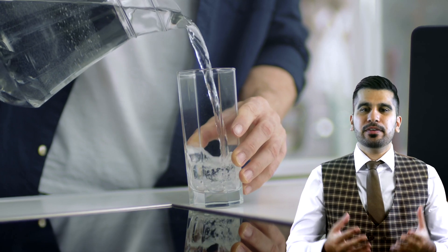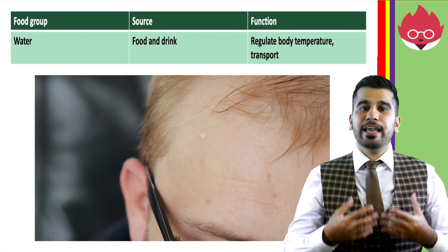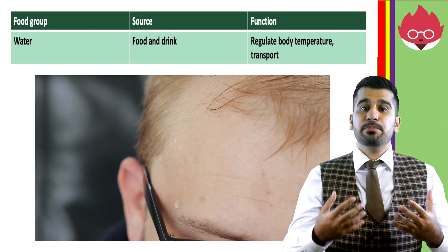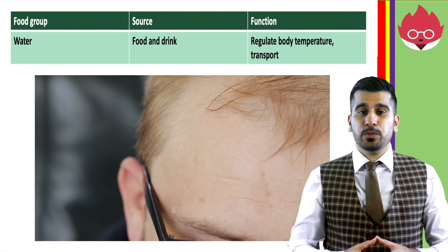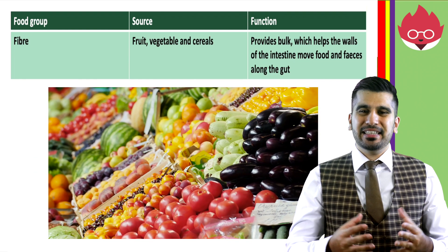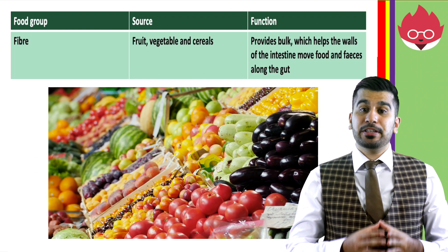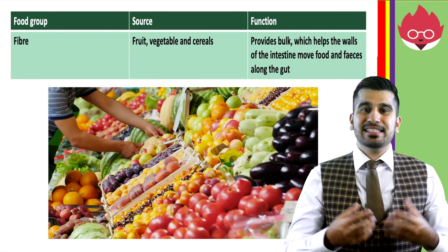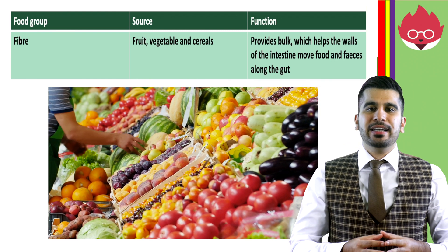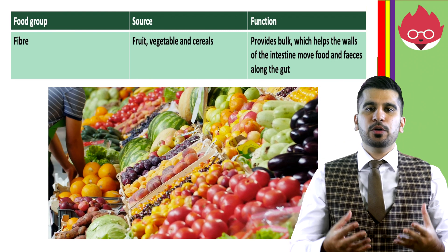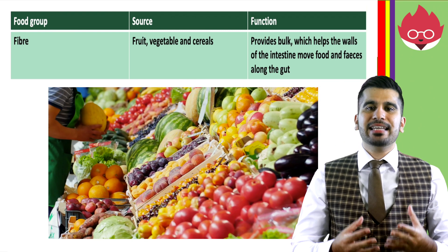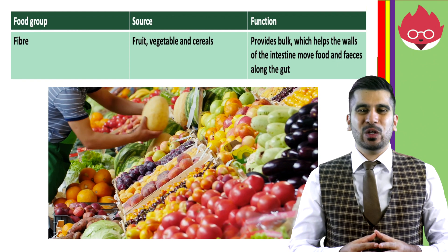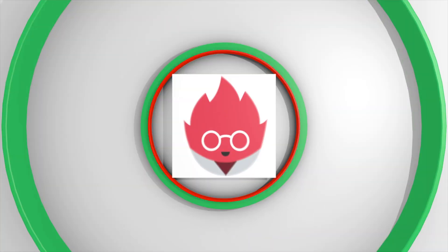Water, found in many of our food and drink, helps regulate temperature and is important for transport. Finally, fibre, found in fruit, vegetables, and cereals, provides bulk, which helps the walls of the intestine move food and faeces along the gut.